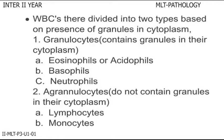Granulocytes contain granules in their cytoplasm. These are of three types: eosinophils or acidophils, basophils, and neutrophils. Agranulocytes do not contain granules in their cytoplasm. They are of two types: lymphocytes and monocytes.